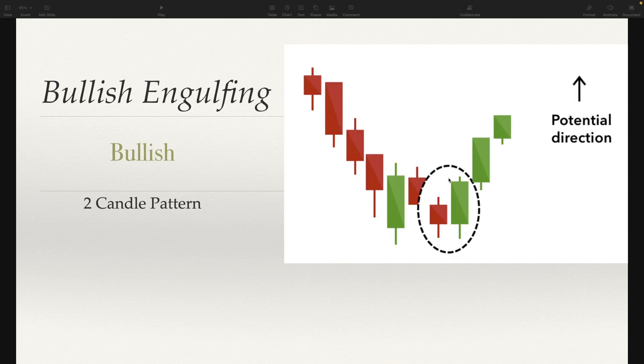Not only do you have buyers coming in because we're on a nice green day after a downtrend, but you also have some shorts that will need to cover their positions, creating more shares being bought. I really like the bullish engulfing candle — it's one of my favorites. And once again, you can look for it on any chart timeframe.